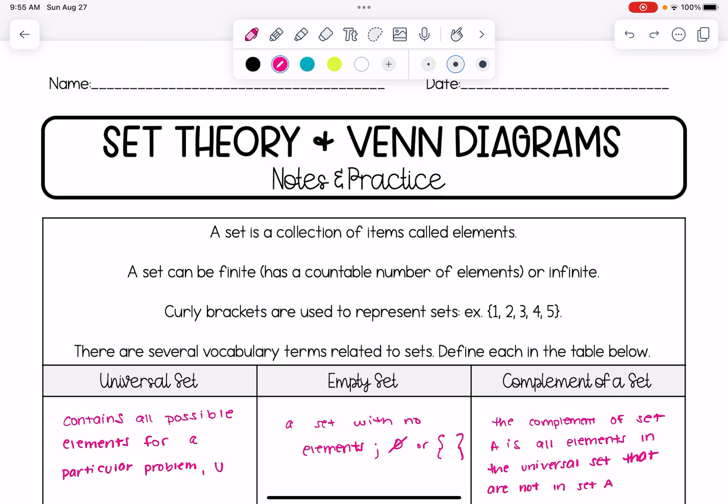So for instance you've learned before about the set of integers. Integers is an infinite set, we can't possibly count the number of elements. We use curly brackets to represent sets and you'll see here the curly brackets around the set one, two, three, four, five.